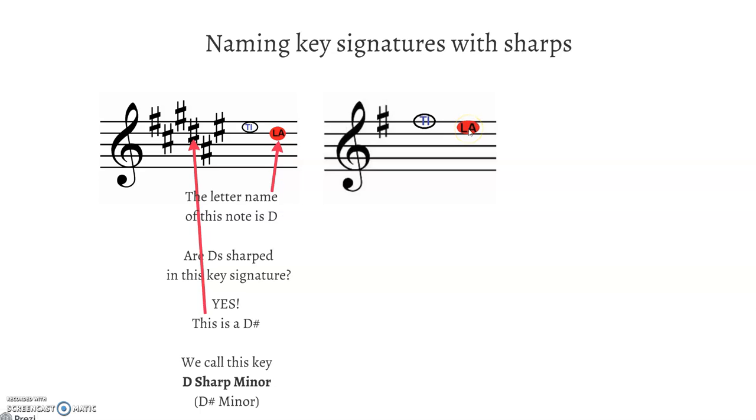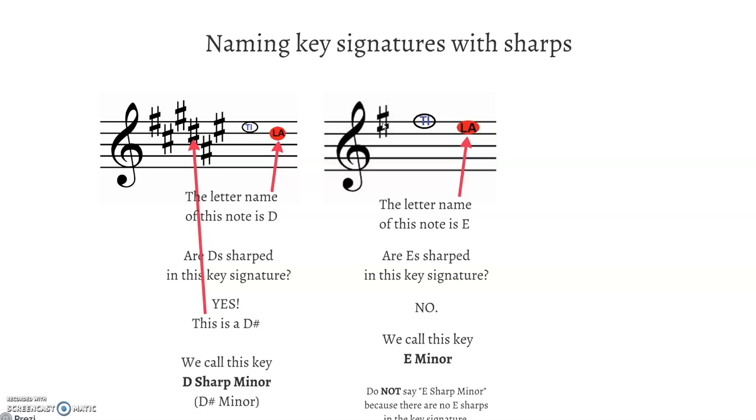Here's our La. What letter name is that? It's an E. Now we go to the key signature, which is this right here. We're going to check to see if E's are sharped. And no, they are not because that's an F sharp. So we're going to call this E minor. Don't say E sharp minor because there are no E sharps in this particular key signature. There's only an F sharp. We're going to call it E minor.